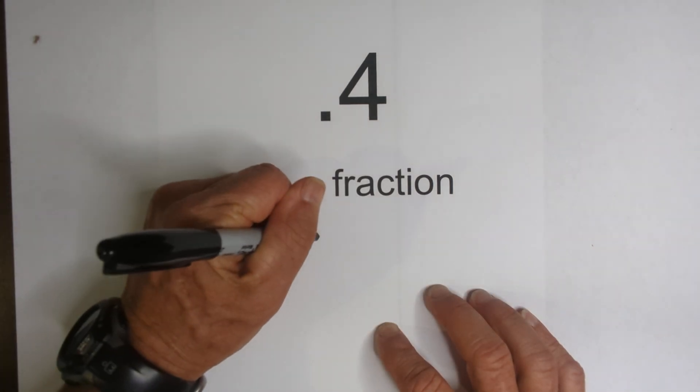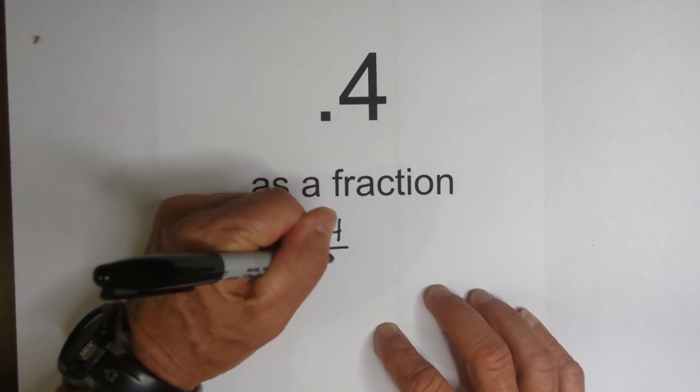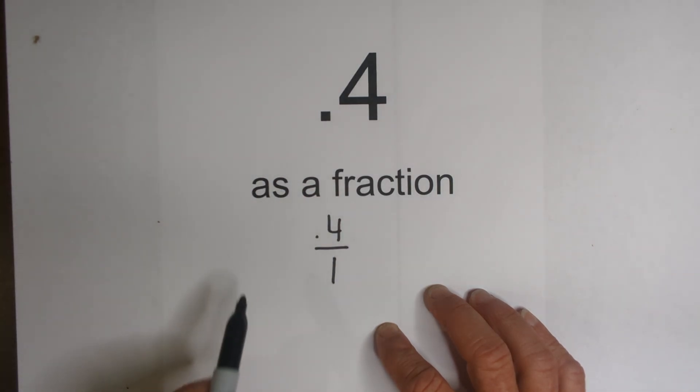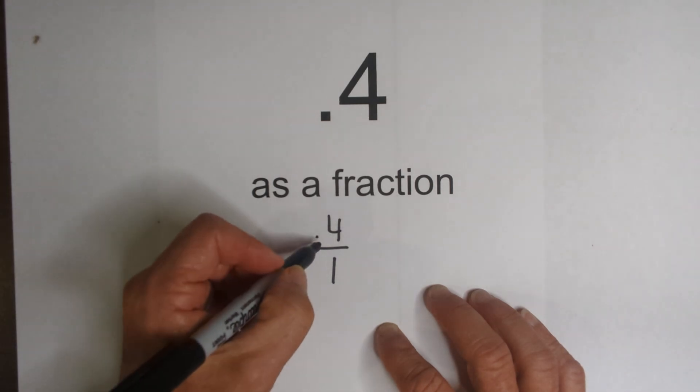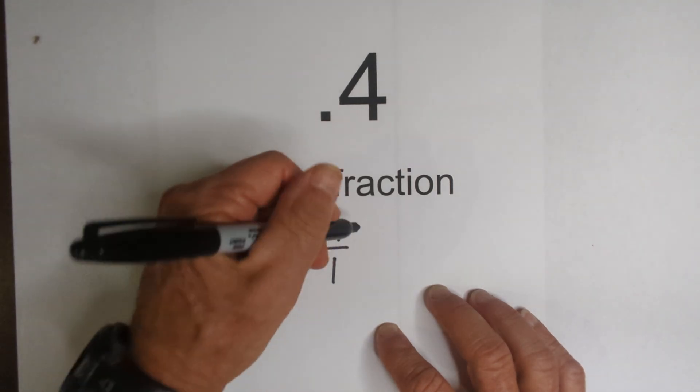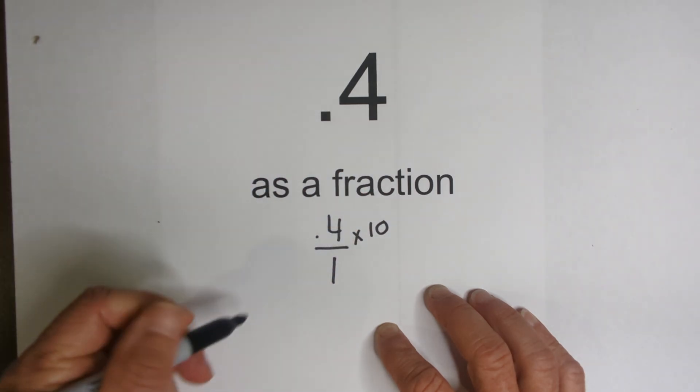So we're going to start by writing 4 tenths over 1. Now we need to convert 4 tenths to a whole number. So we need to move the decimal one place to the right, so we can do that by multiplying by 10.